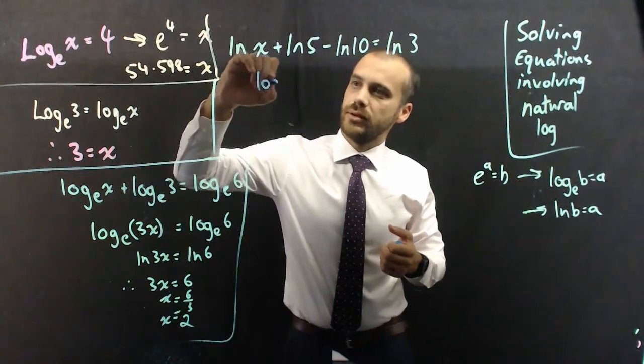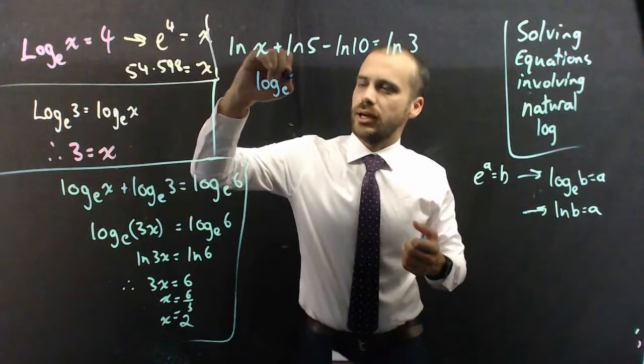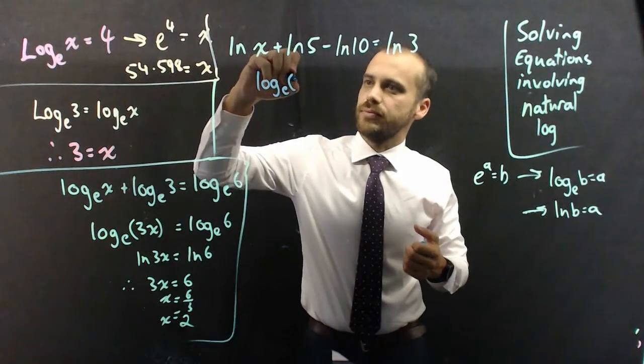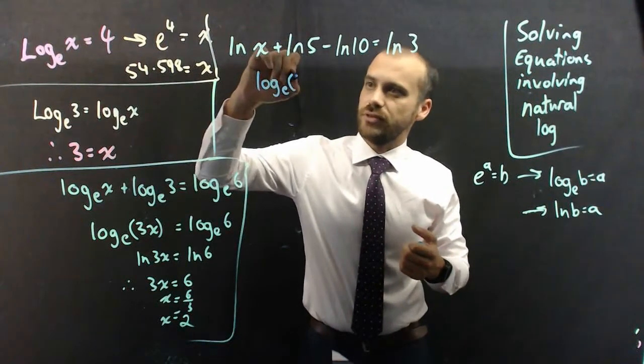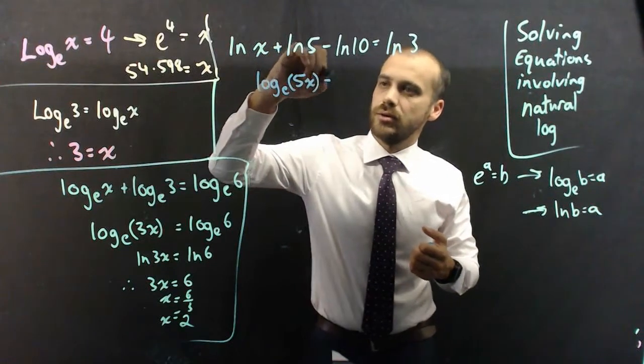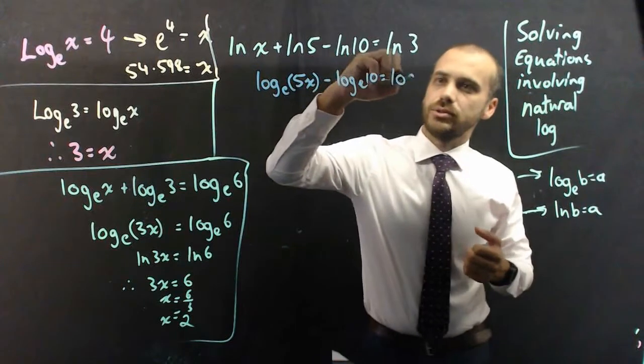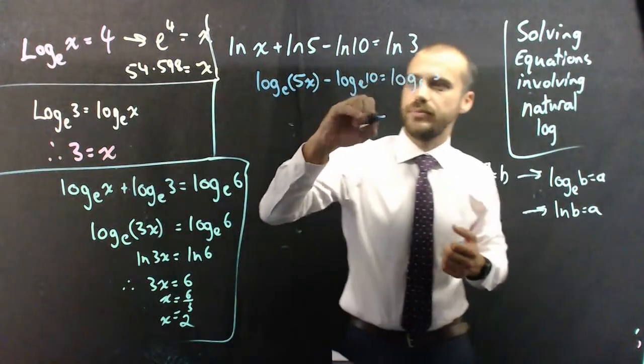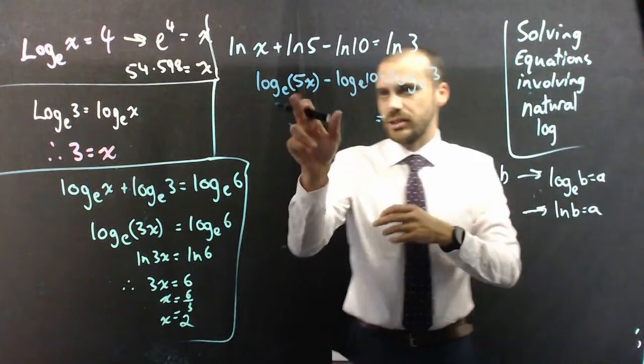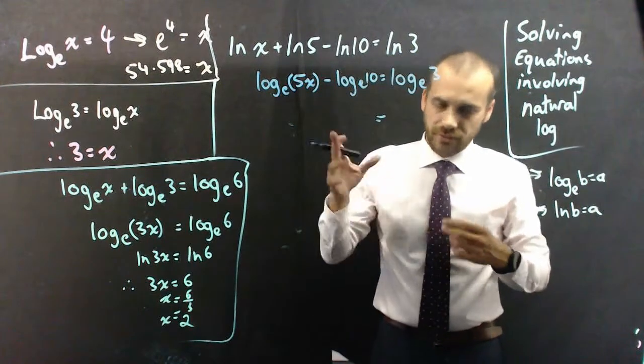we can do something similar to that. So, we can say, oh, why am I doing that? Oh, well. Log base e x times 5 is 5x minus log base e 10 equals log base e 3. All right. Now that I've got that, I don't really need those brackets there, so I'll just call it log base e 5x.